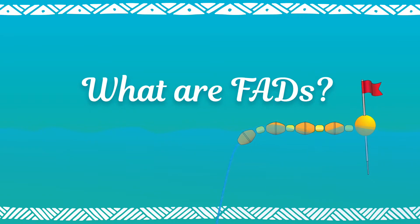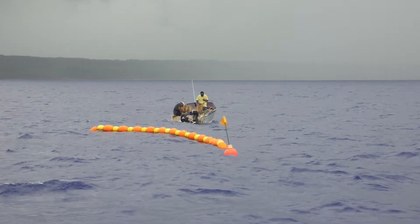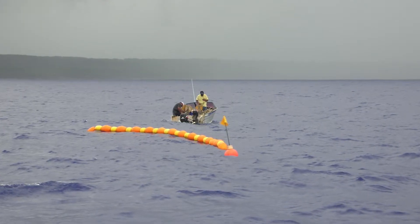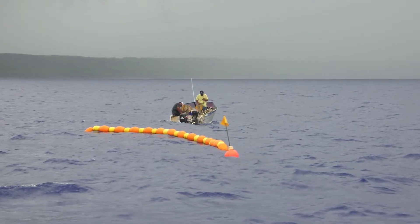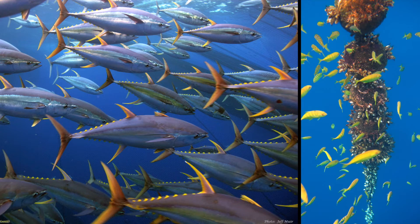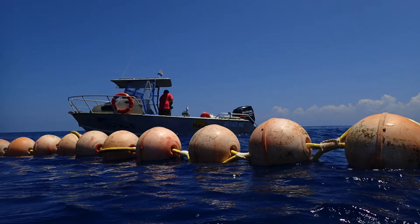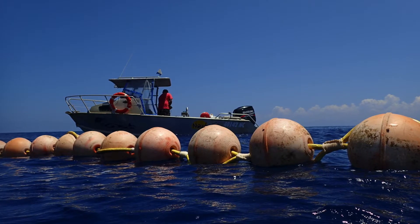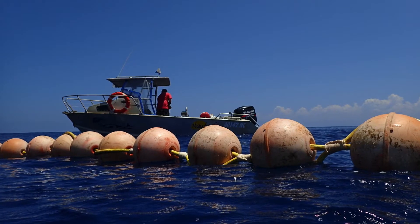What are FADs? Fish aggregating devices, or FADs, are artificial objects strategically placed in the ocean to attract fish. Tuna and other fish gather around FADs, which makes it easier to find and catch them.